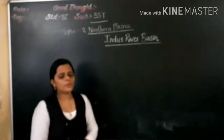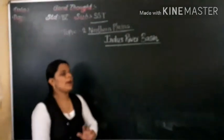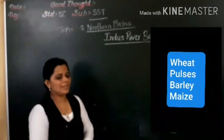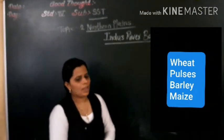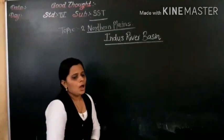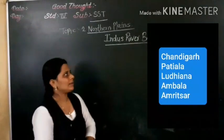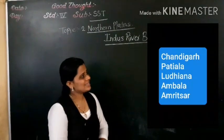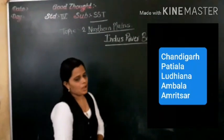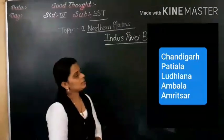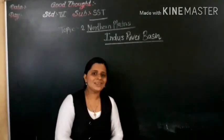Now let's talk about the major crops. Which crops are grown in that region? The major crops are wheat, pulses, barley, and vegetables. Now the important cities in this river region are Chandigarh, Ludhiana, Patiala, Ambala, Amritsar, etc. Hope we have understood about the flow and features of this river. Thank you.